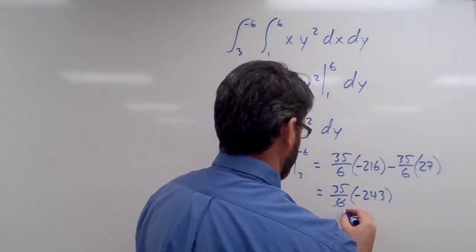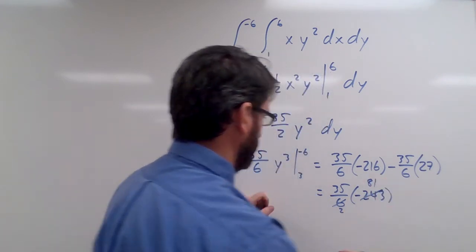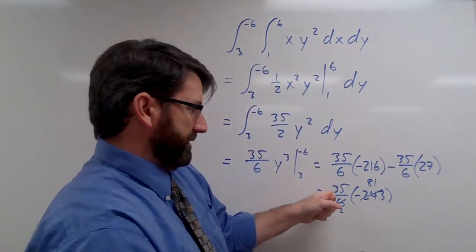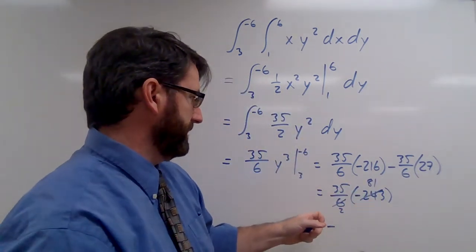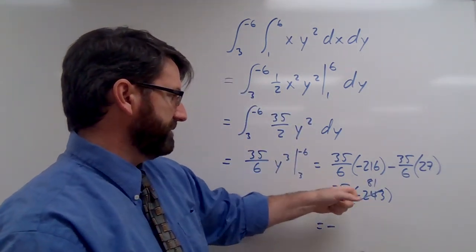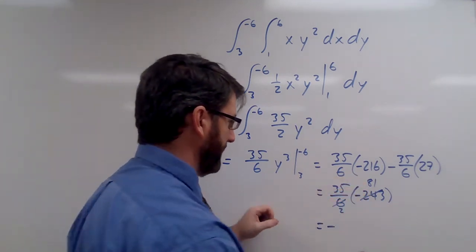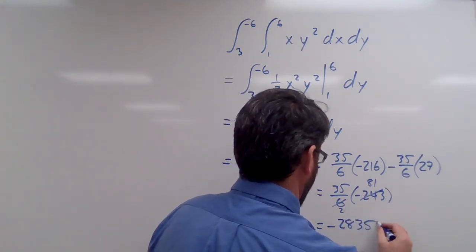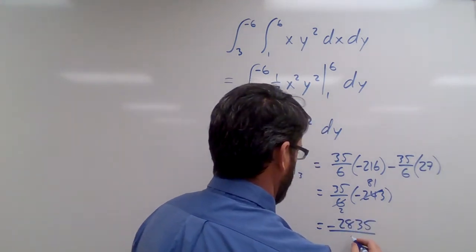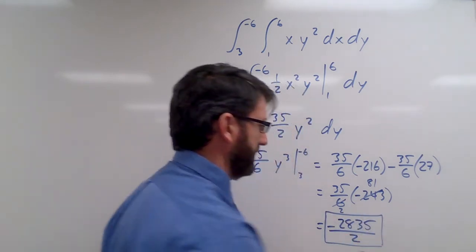We can reduce this by 3, that's going to be 81. So this is going to be negative, and 35 times 81, 35 times 80 is 70 times 40, which is 280 plus the 35. It's going to be 2835 divided by 2, and that's going to be our answer.